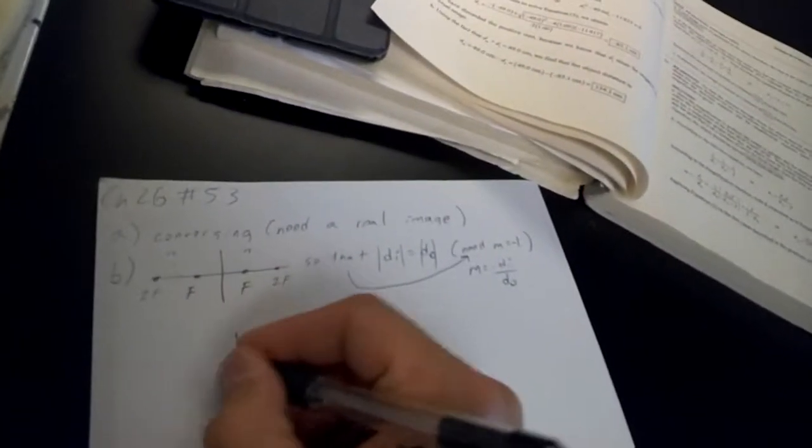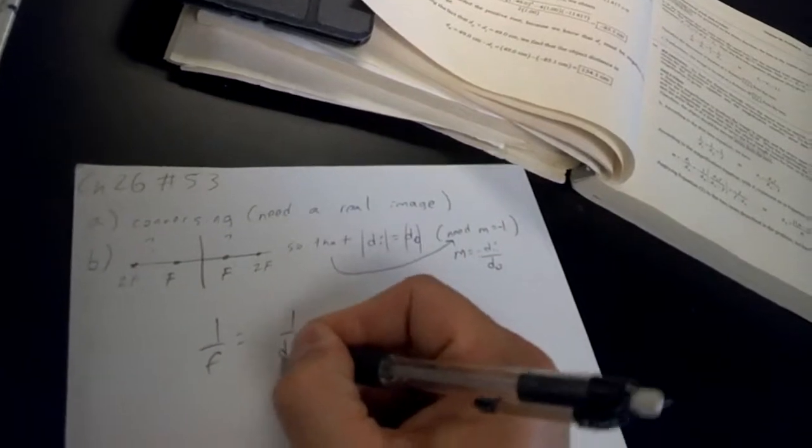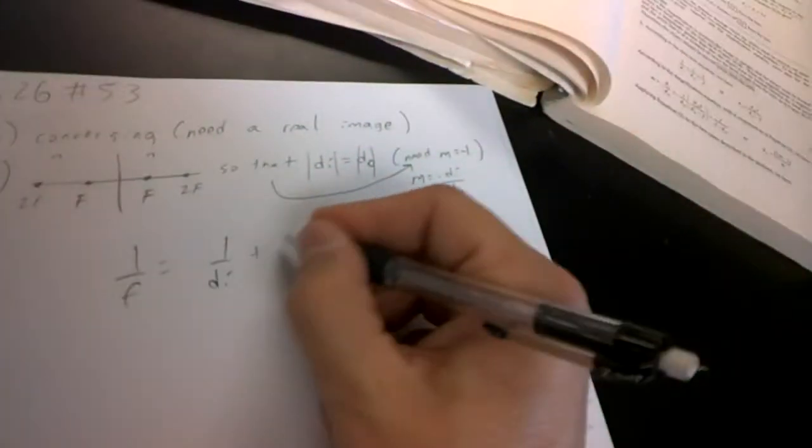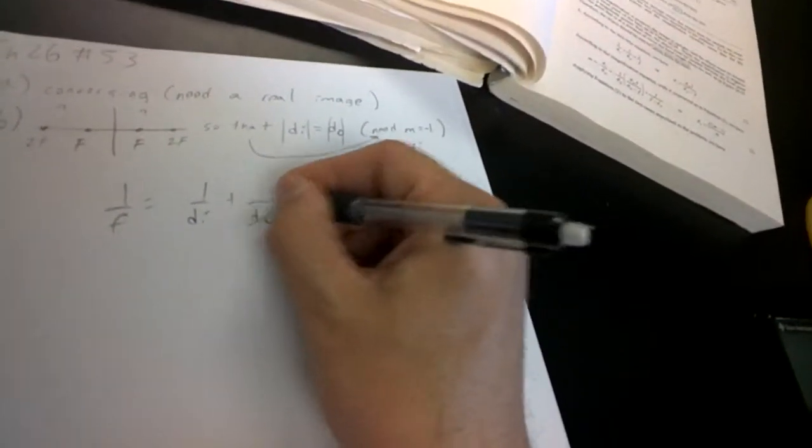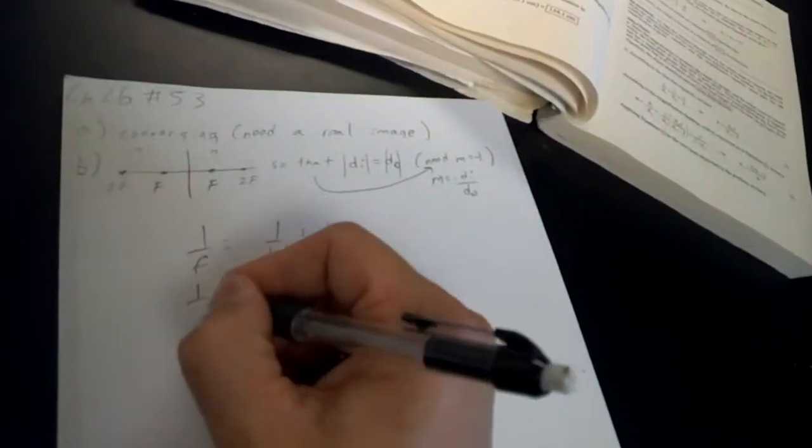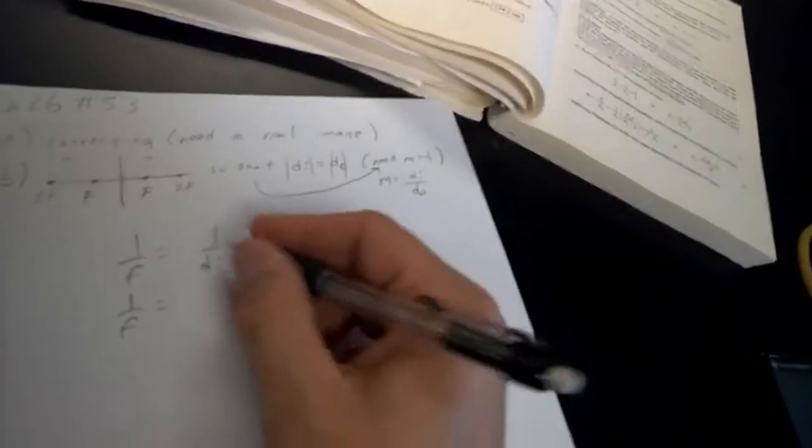That makes our equation pretty simple once we realize that. Realizing that is the tricky part. So I'm just going to replace one of these with the other, I'll just make this di because they're interchangeable. So I'll have one over f equals two over di, or di equals 2f.